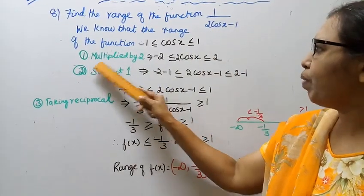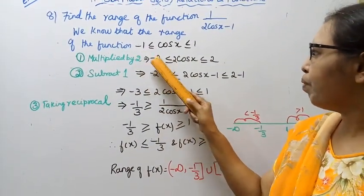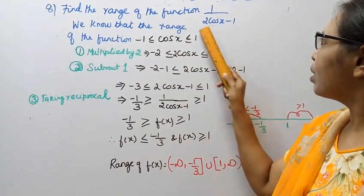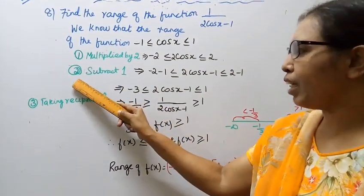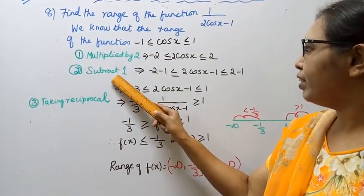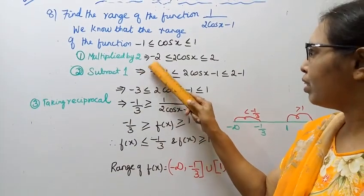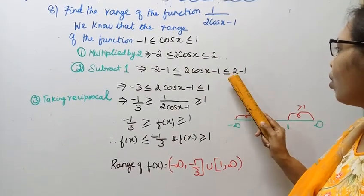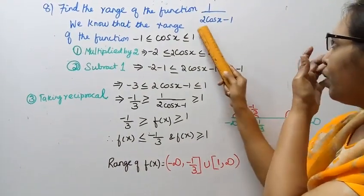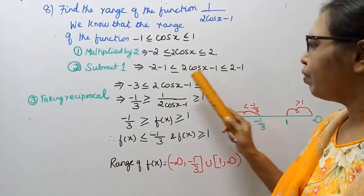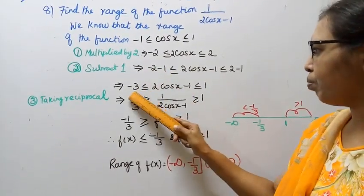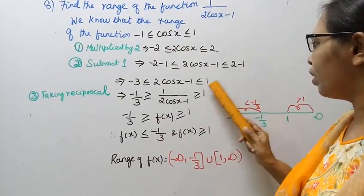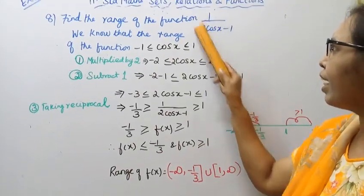First, multiply by 2: -2 ≤ 2cos x ≤ 2. Now, 2cos x - 1 is in the denominator, so subtract 1: -2 - 1 ≤ 2cos x - 1 ≤ 2 - 1, which gives -3 ≤ 2cos x - 1 ≤ 1.